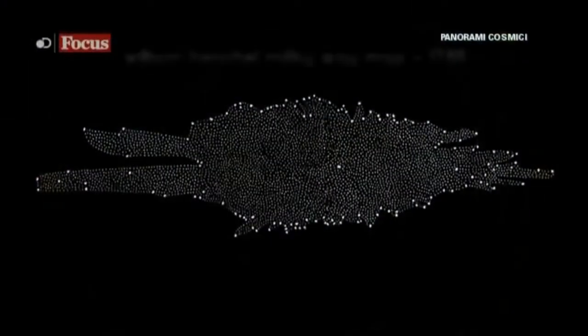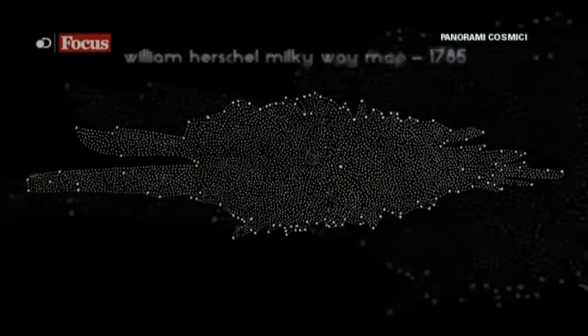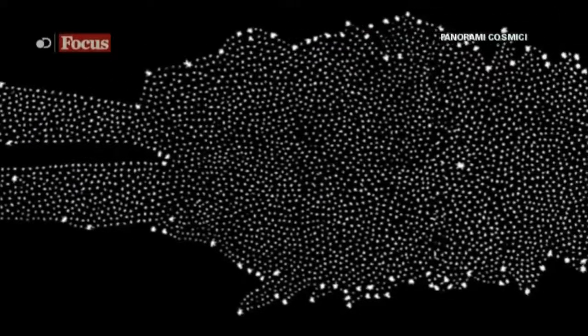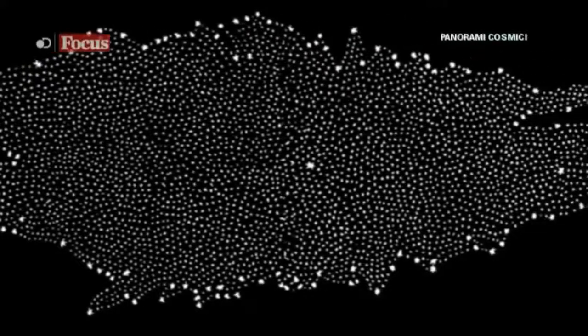Herschel credeva che le stelle meno luminose si trovassero più lontane di quelle più brillanti. Quindi, quando mise tutto insieme, l'immagine dell'universo che ne derivò mostra che siamo immersi in un vasto sistema di stelle che ha una forma schiacciata, somigliante a una grande macina o a un disco.